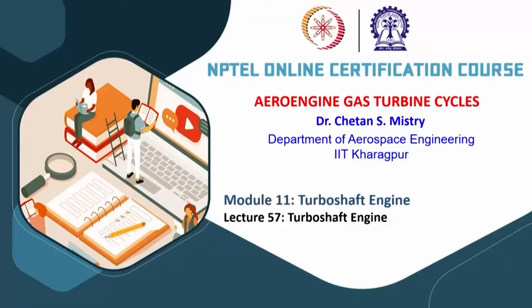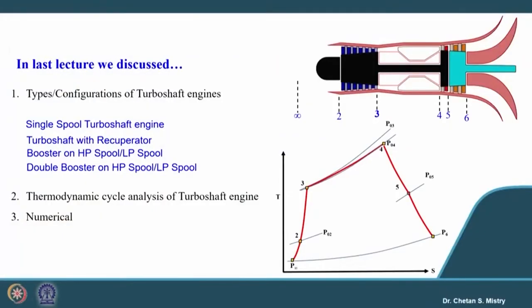Hello and welcome to lecture 57. We are discussing about the turbo shaft engine. In the last lecture, we were discussing about the type or configurations possible for the turbo shaft engine, where we discussed the single spool turbo shaft engine, turbo shaft engine with recuperator, booster compressor on HP spool or LP spool, and double booster kind of configuration on HP spool or LP spool.